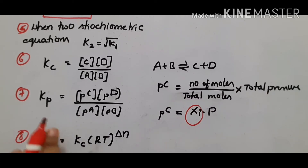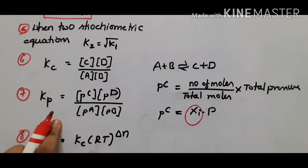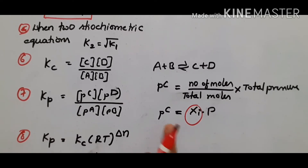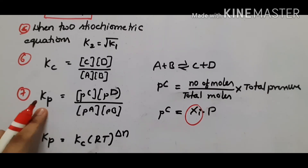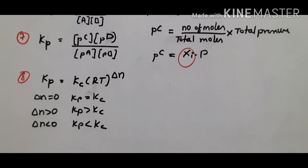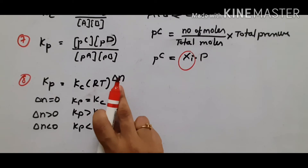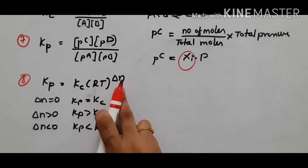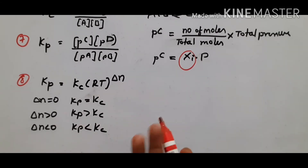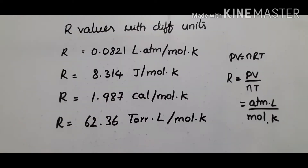We can interconvert between partial pressure and mole fraction. The last and most important relation is Kp equal to Kc into RT to the whole power delta n, where delta n equals total number of products minus total number of reactants. When delta n equals zero, Kp equals Kc.